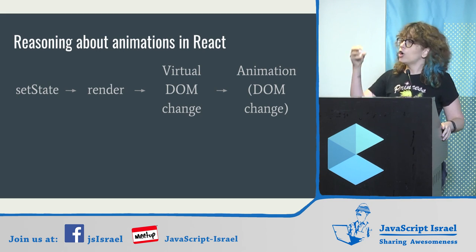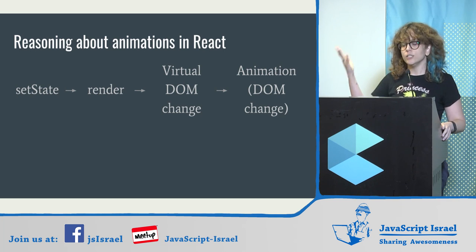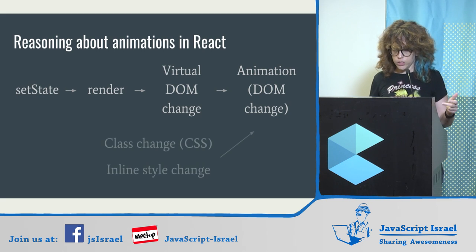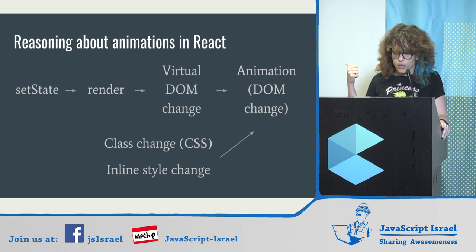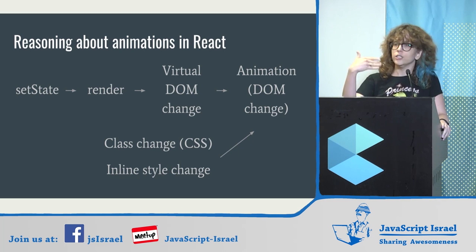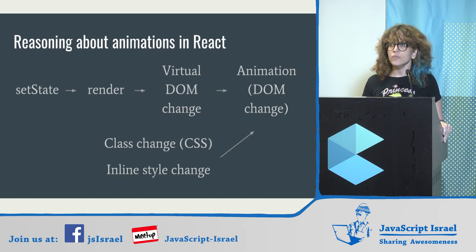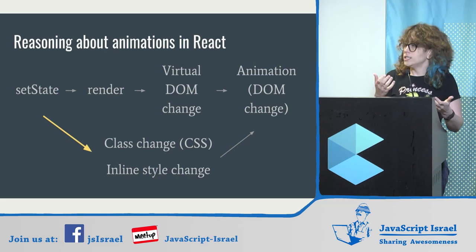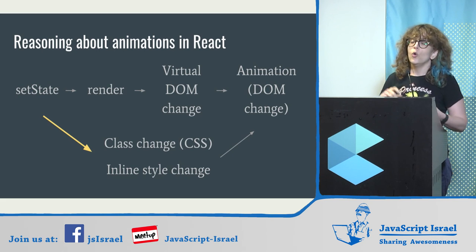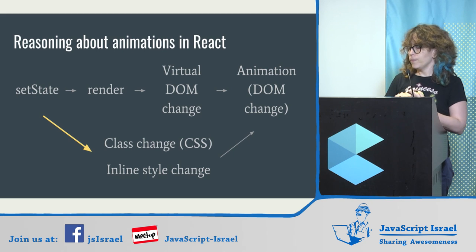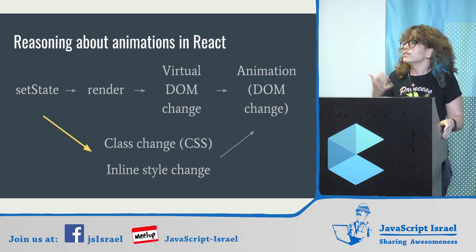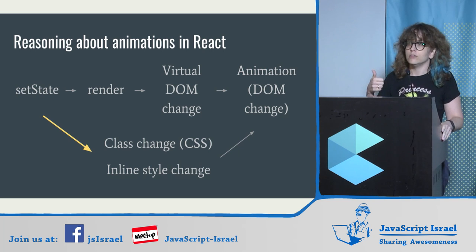That flow already clues us in to how we should do animations in React: we need to start from state. We need to structure our state and call setState in a way that triggers the animation we want. We can do this with CSS — changing a class to apply different styles like opacity — or with inline styles that allow calculations on elements. The key question becomes: how do we initialize state and call setState to create a class change or inline style change when we want our animation to run? That's the only question you need to answer.